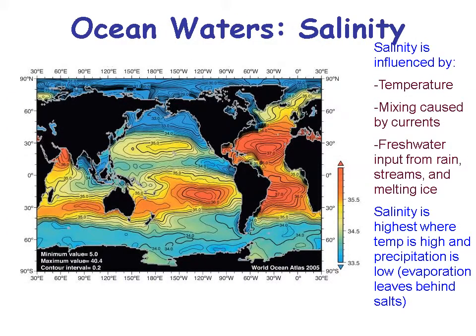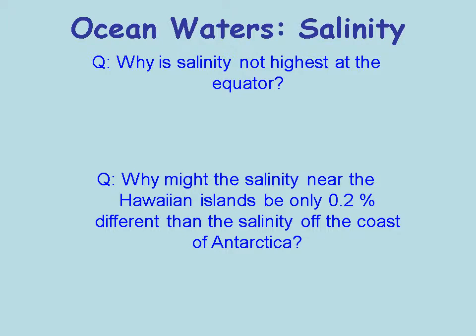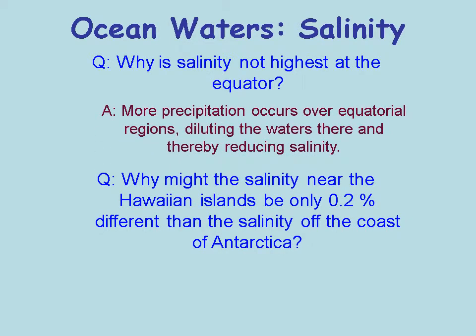Oceanic salinity is influenced by temperature, mixing of currents, and how much fresh water is input from rain, streams, and melting ice. Salinity is highest where temperature is high — causing lots of evaporation — and precipitation is low. Red areas on the map show higher salinities; blue shows lower salinities. The ocean is not highest in salinity at the equator because there's more precipitation there, diluting the waters. Ocean currents also mix salinity, either diluting it or bringing more saline water to an area.